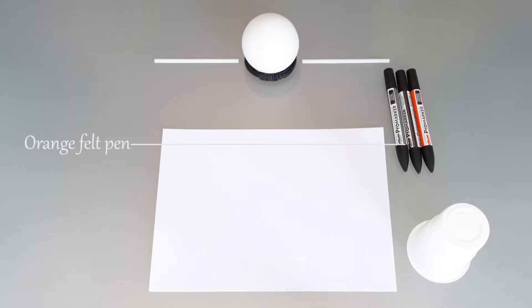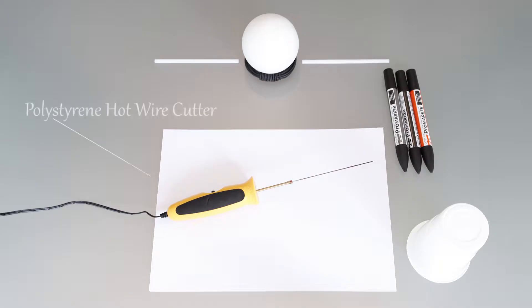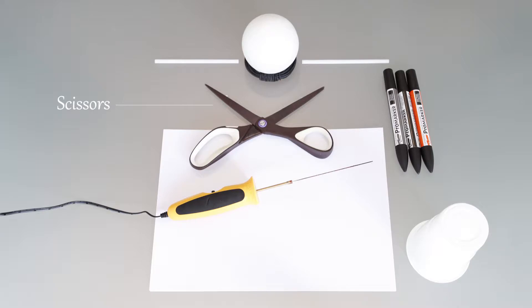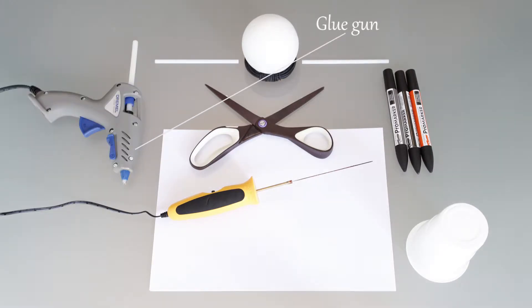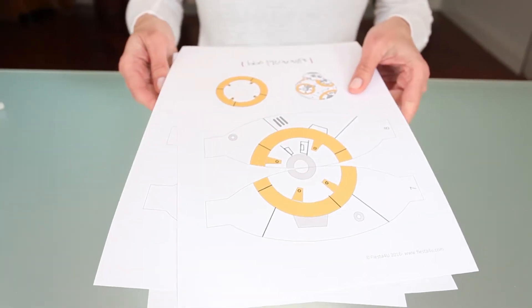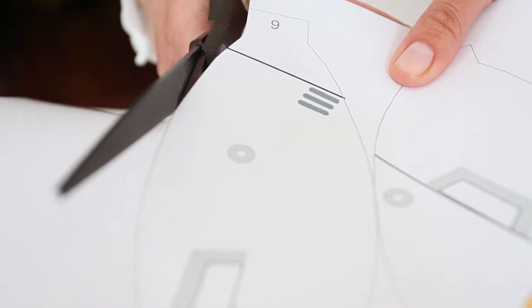Orange felt pen, black felt pen, gray felt pen, polystyrene hot wire cutter, scissors, glue gun. Print the cutouts for the BB-8 prototype and cut them out.